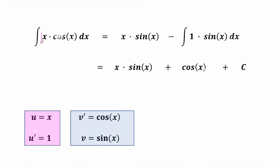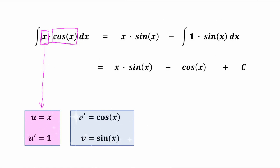We will use this formula to integrate the function x times cosine x. Here we have a product of two functions, so we will be integrating by parts. First we need to identify the part that we will be differentiating and the other part that we will be integrating. In this example we will be differentiating the function x, so let us call this function u. The other part, namely the cosine function, is the part that we will be integrating, so let us call this function v prime.